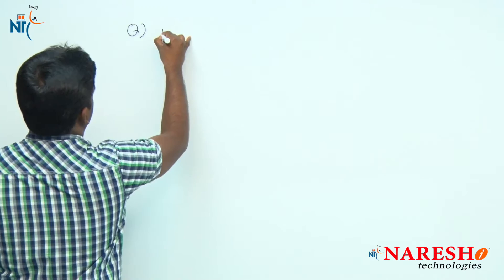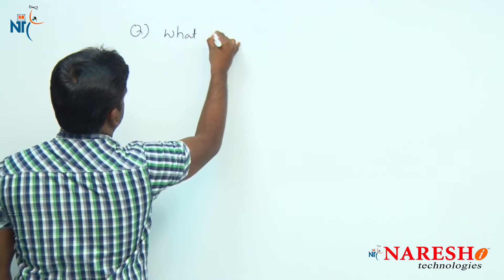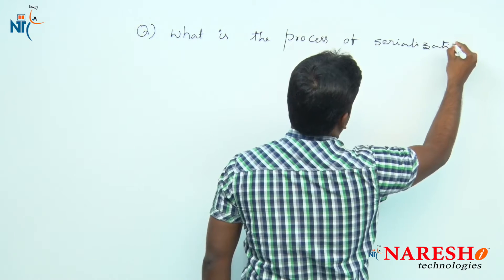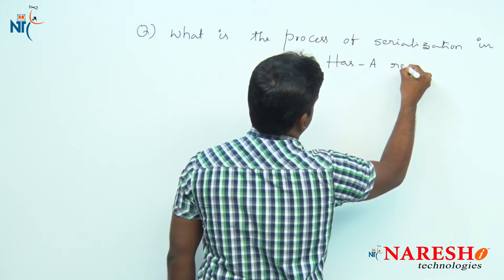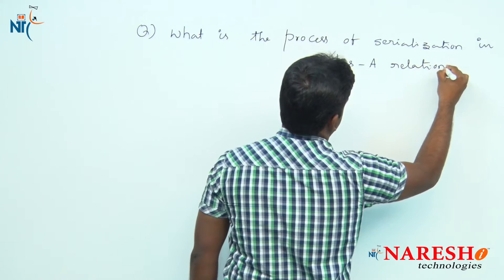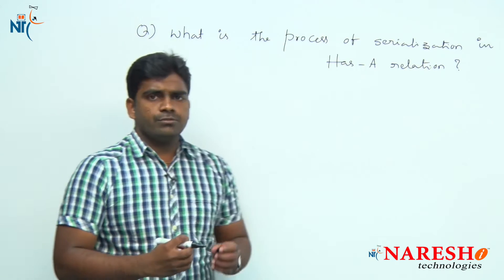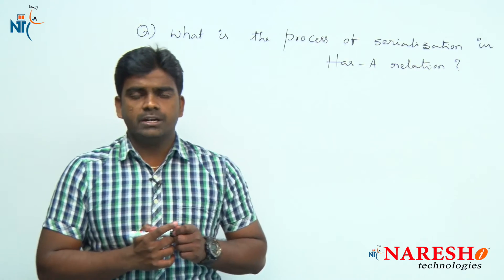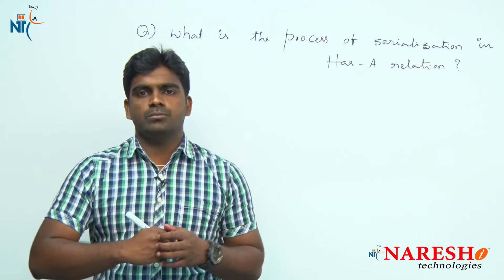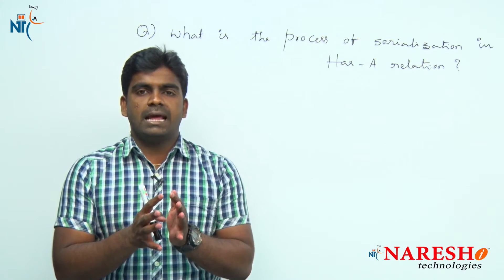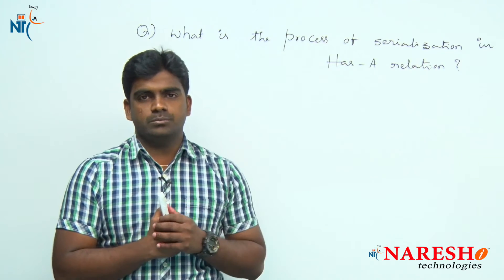Hi everyone, welcome to Nourish Technologies. This is Srinivas. In this session we are going to discuss one interview question on serialization — specifically, what is the process of serialization in a has-a relation. First of all, what is a has-a relation? One object is holding the address of another object, so the first object can access the complete functionality of another object.